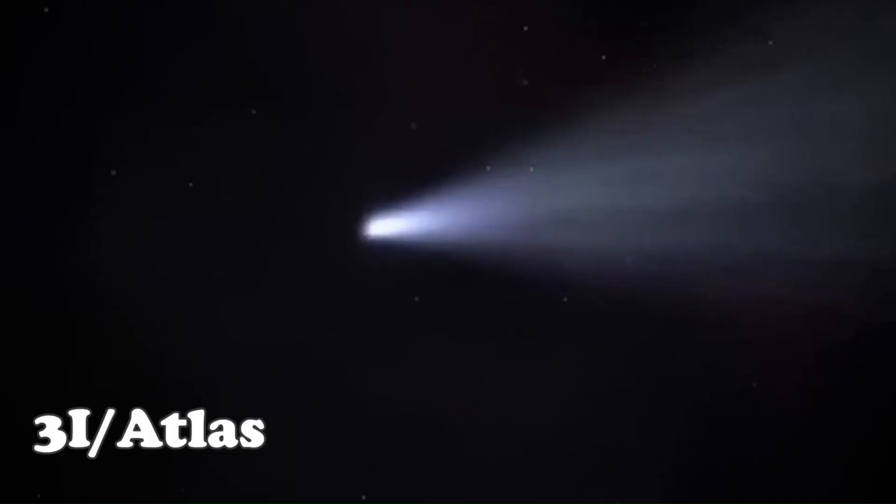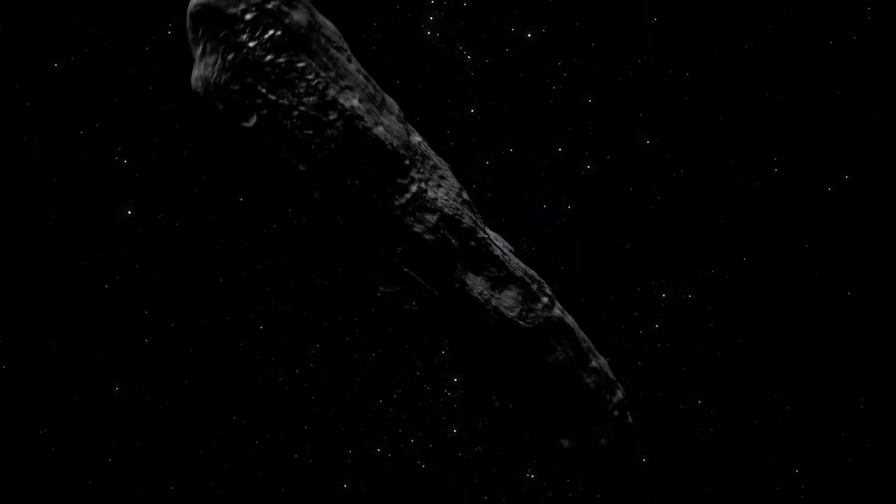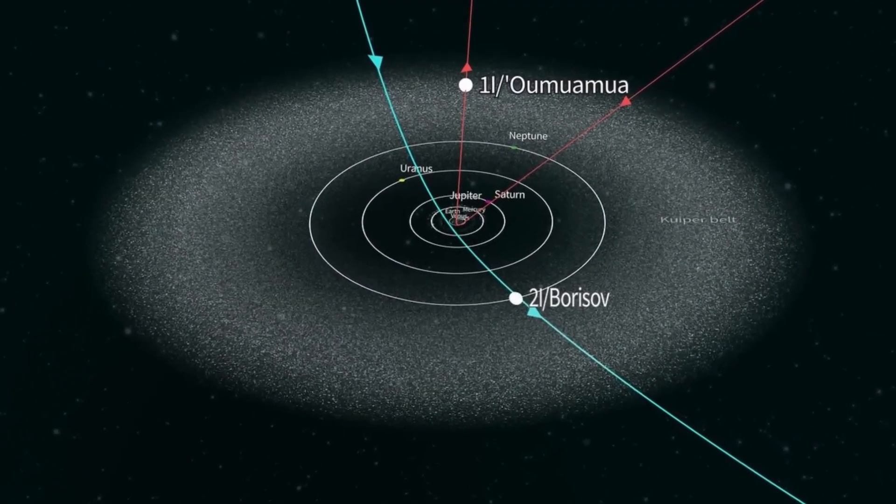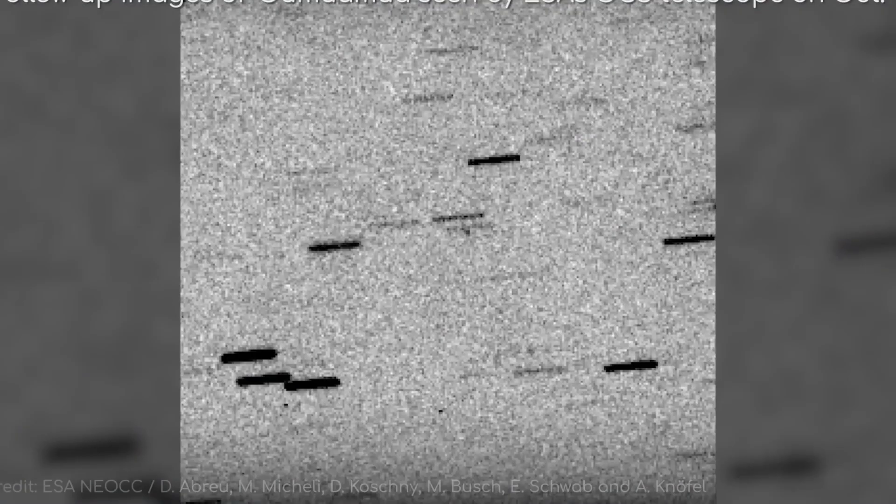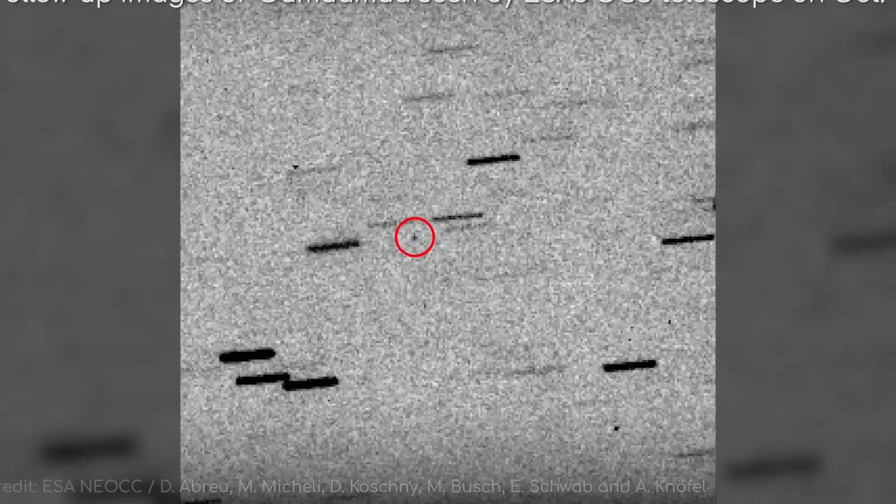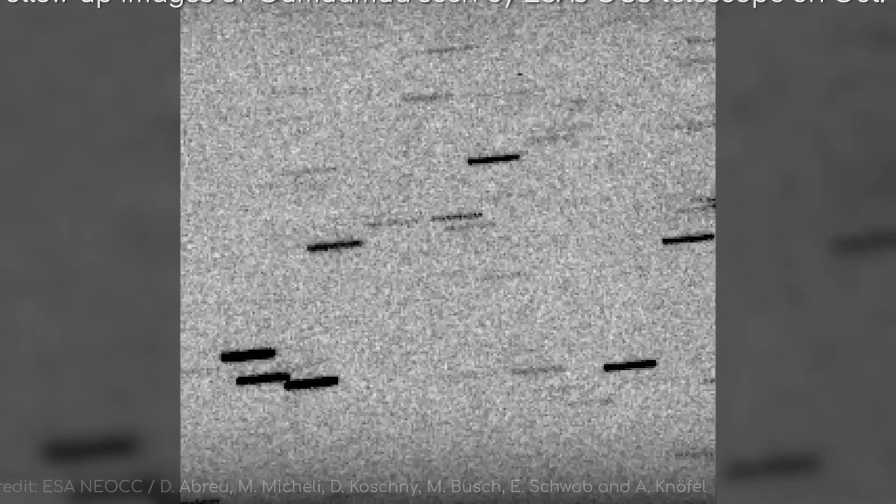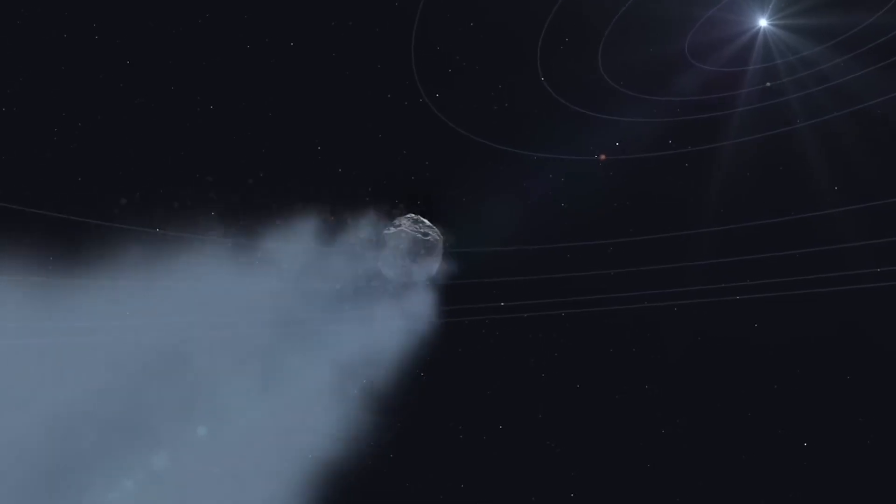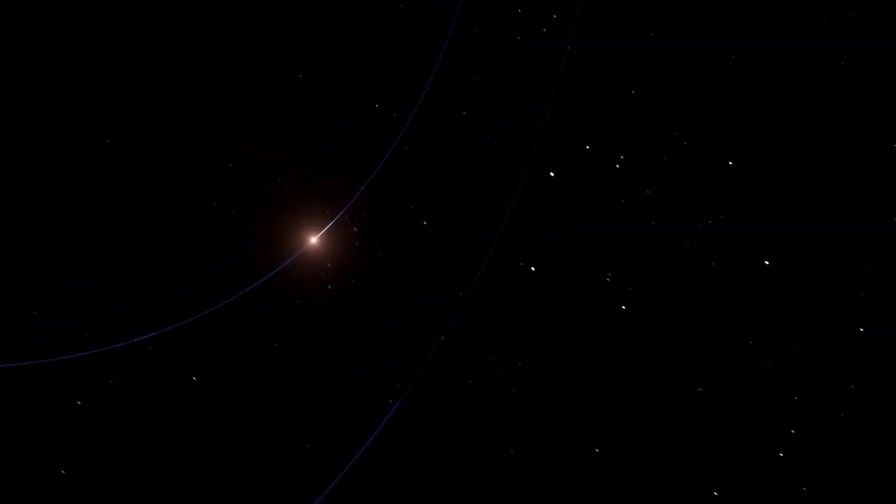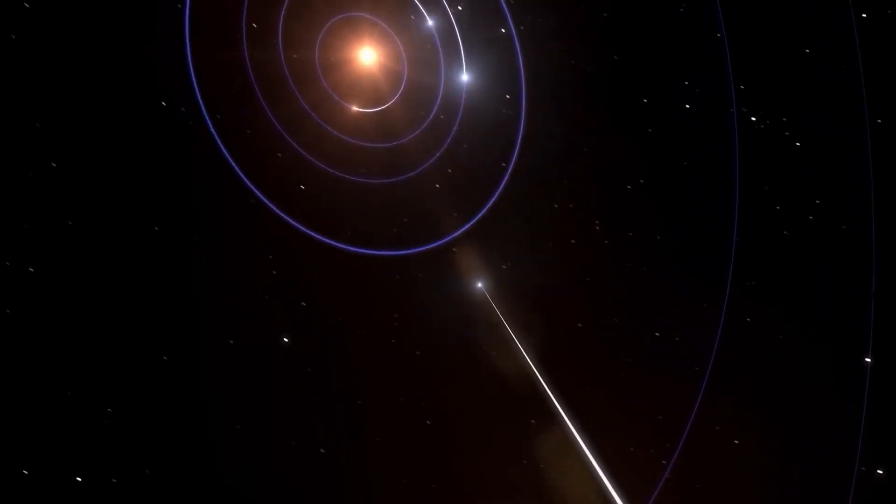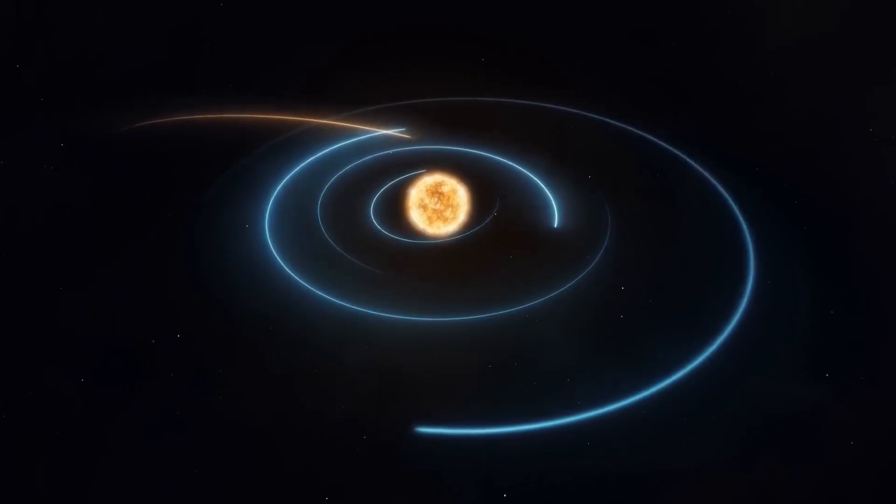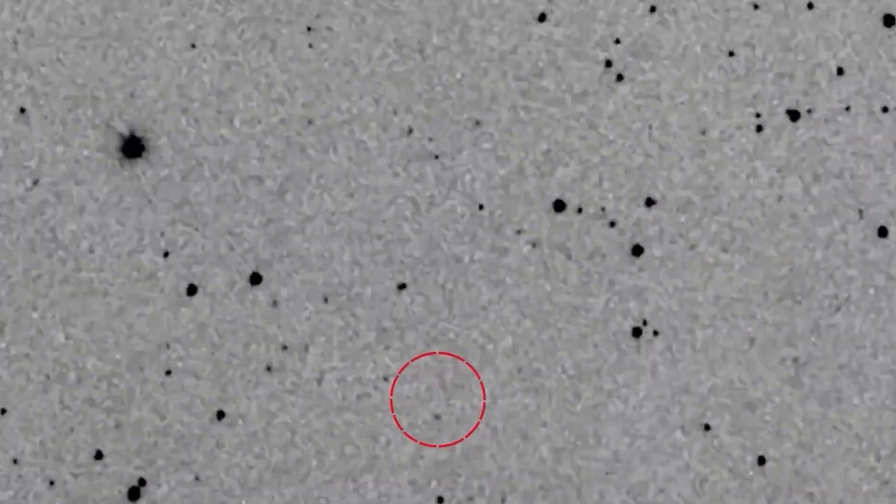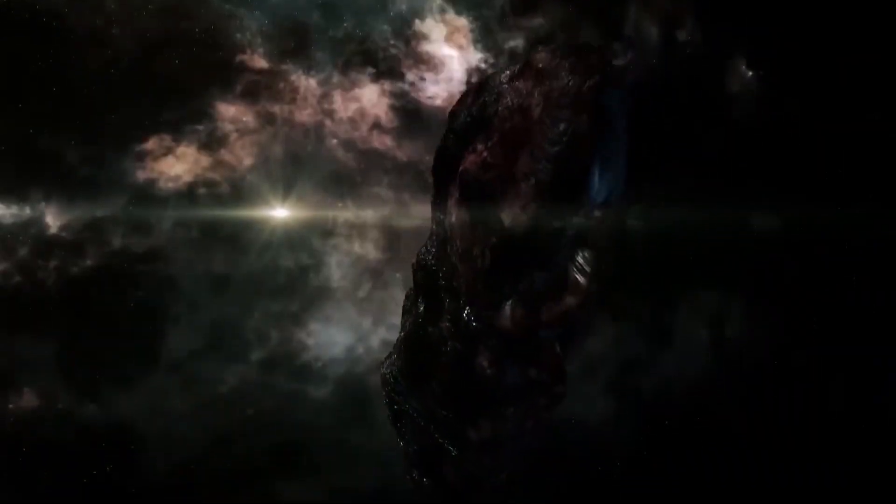Its path is what makes it especially unusual. Unlike other interstellar visitors such as Oumuamua and Borisov, which came from random directions, 3I Atlas follows a retrograde orbit, moving opposite the direction most planets travel, yet it stays almost exactly within the same orbital plane as the planets. The odds of this happening by chance are extremely low, around 0.2 percent. Even more striking, its orbit is tilted less than 5 degrees from Earth's.